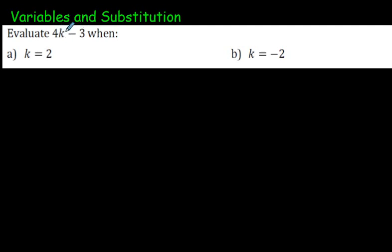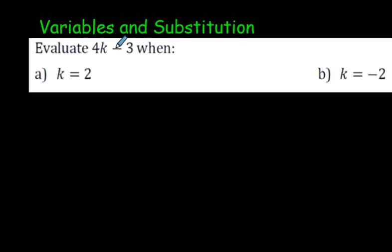So here we have 4k minus 3. What that really means is 4 times some number minus 3. So, 4, and instead of writing the k there, I'm just going to put a bracket, and then minus 3. I'm going to substitute the 2, because it says k equals 2. Instead of a k, I'm going to put the 2 right here. I have just substituted 2 for k.